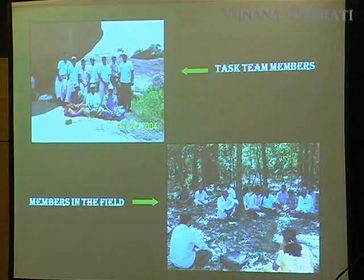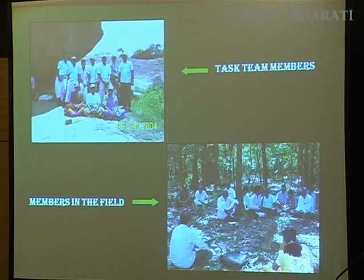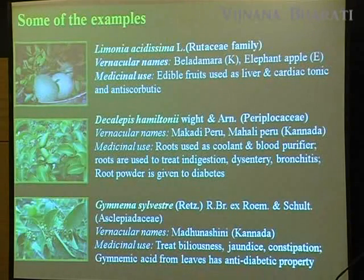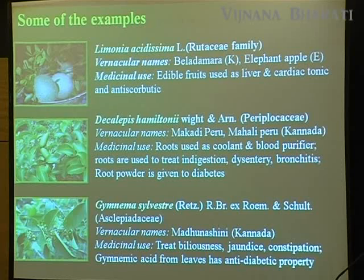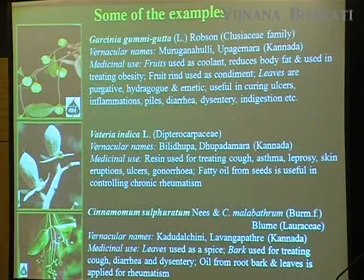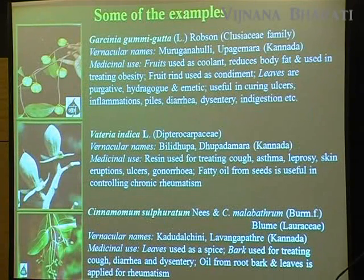This is the task team at Samanadurga and Agumbe. Some examples of species selected for sustainable collection include Dacallupis amiltoni, Limonia acidissima, Gymnema sylvestre, Garcinia gummigatta, Vetaria indica, and Cinnamomum sulpuratum.